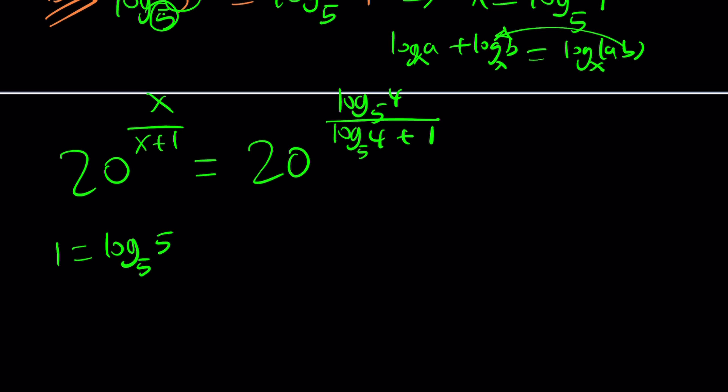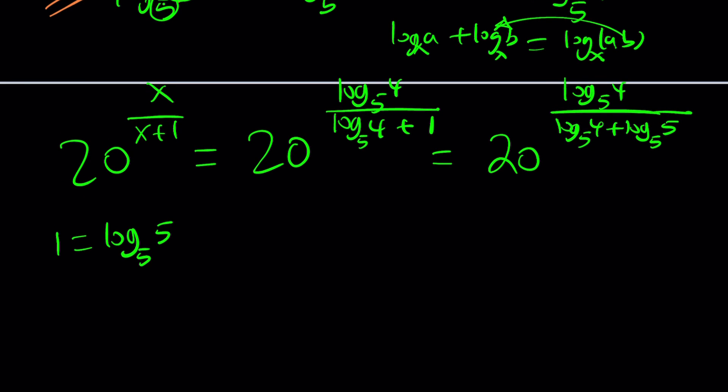And then this becomes 20 to the power log 4 divided by log 4 plus log 5. Of course, they're both in base 5. Everything is in base 5. And now we're able to combine these two things. And that actually gives us 20 to the power log 20. And this is going to give us log 20, 4 times 5. But again, the base is 5.